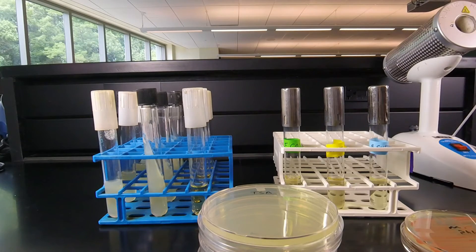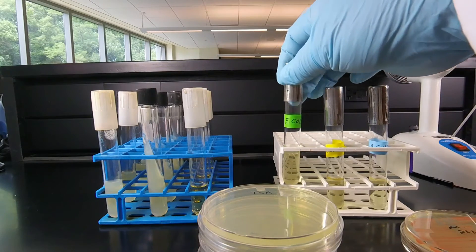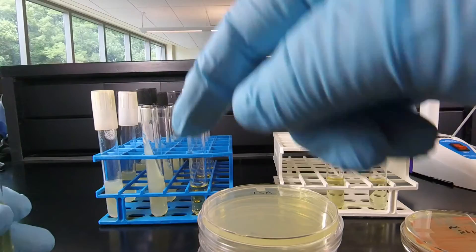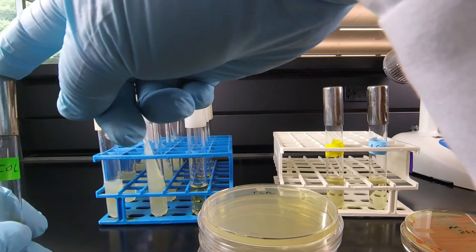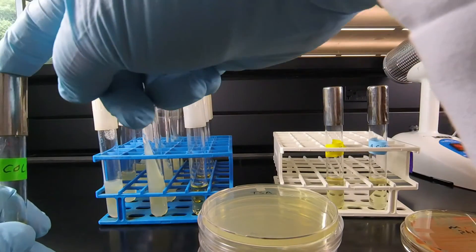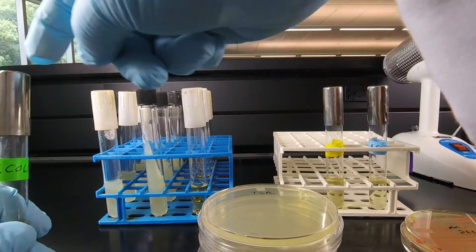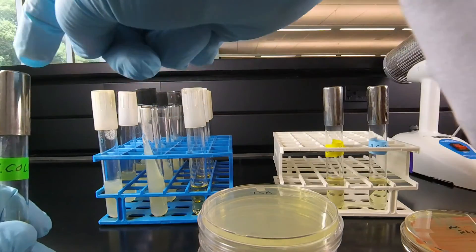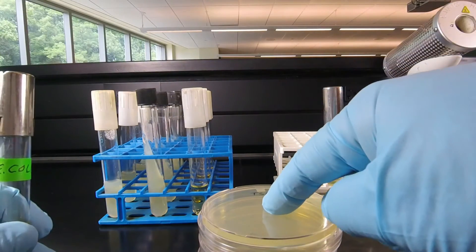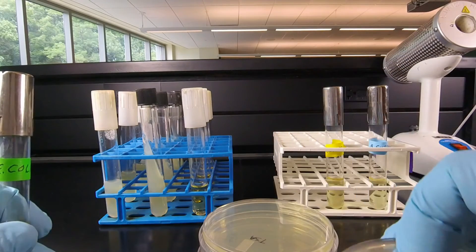So you'll start out by taking E. coli, and you're going to aseptically transfer E. coli into a broth tube, then into a slant tube, into a stab tube, and onto a petri plate. So that's four inoculations.